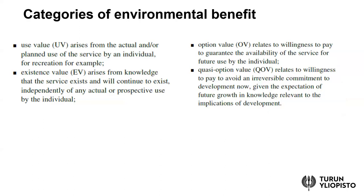Following the textbook by Perman et al., we can distinguish four different categories of environmental benefit, and the opposite, environmental cost. First, there are direct use values, which arise from the actual or planned use of an environmental service. Think about, for example, a nature reserve or national park where it is possible to visit and enjoy the services of the natural environment.